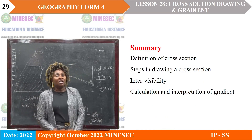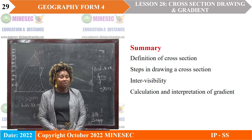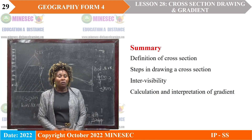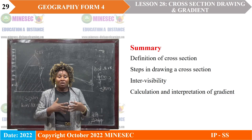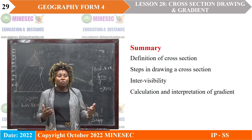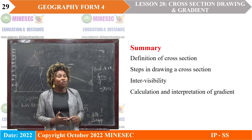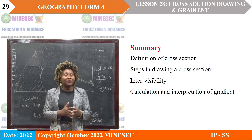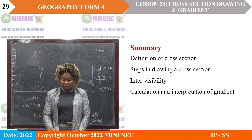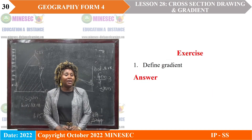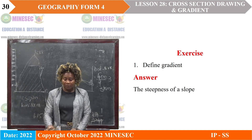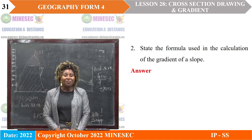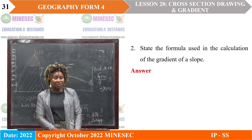In summary: a cross section is a line graph drawn between two points showing the rise and fall in the height of the land. We have seen the steps in drawing a cross section, how to determine inter-visibility between two points, and how to calculate the gradient of a slope. Let us round up our lesson with this exercise: define gradient. The steepness of the slope.